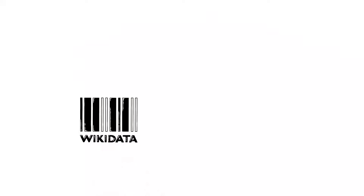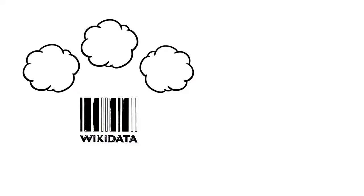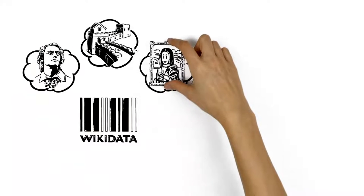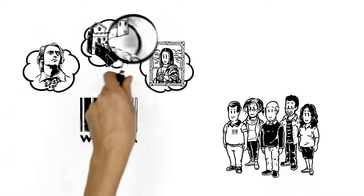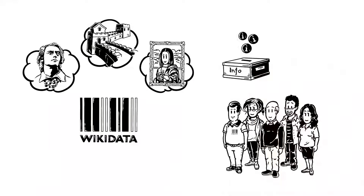Wikidata contains millions of items, each representing different information: a person, a place, or a piece of art. The community of volunteers maintains this data, but the information has to be contributed.